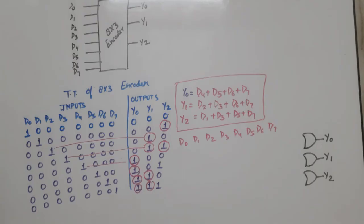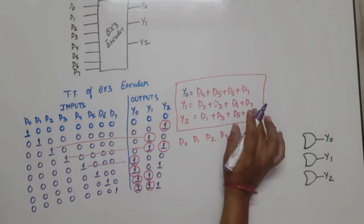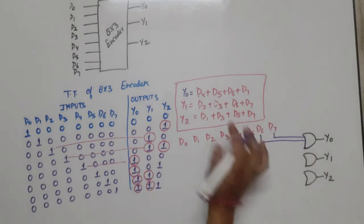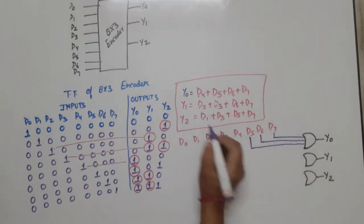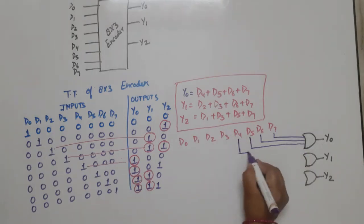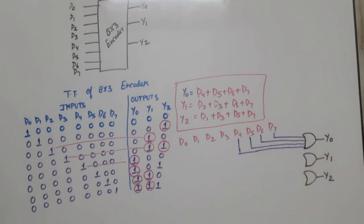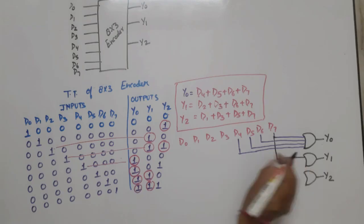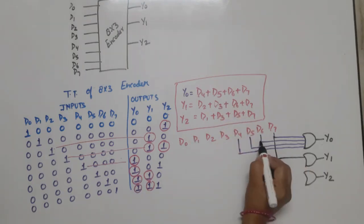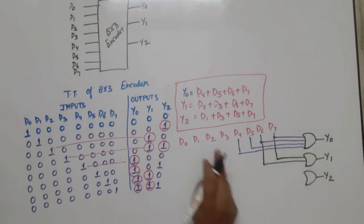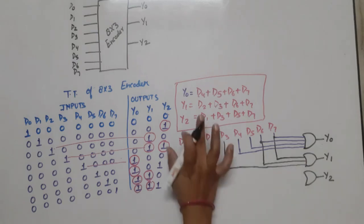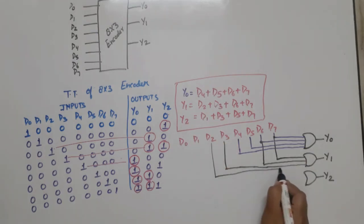Now we have the connections. First, for Y0, the connections are D7, D6, D5, and D4 — so this is Y0. Now for Y1, the connection is D7, then D6, then D3, then D2.